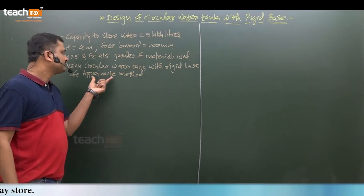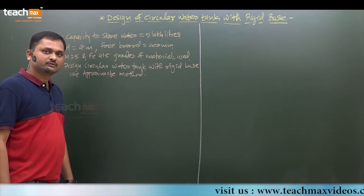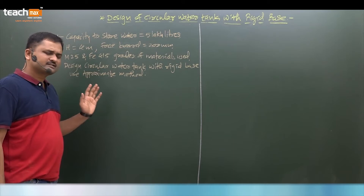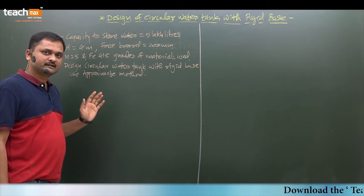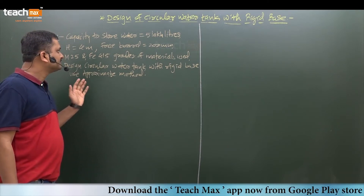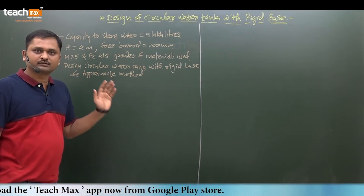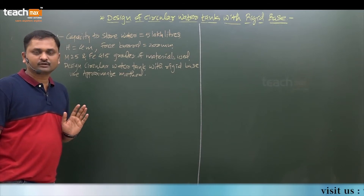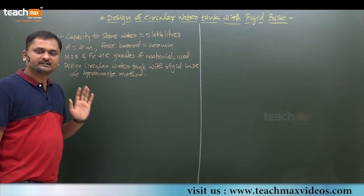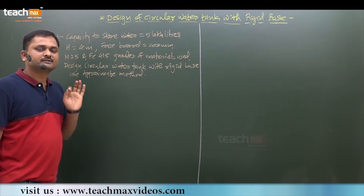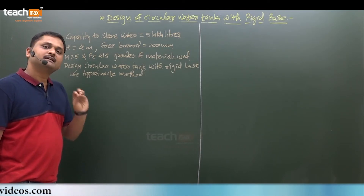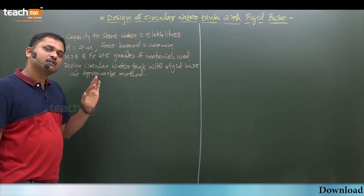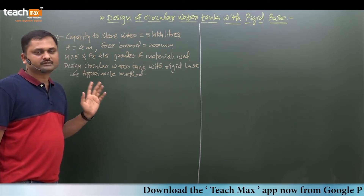We are asked to use the approximate method for the analysis. In this example, I am going to use the approximate method first. Later I will also solve the same example using the IS code method. Note that for circular water tank with flexible base, only the approximate method is applicable — no coefficients or tables are given in IS code for that case. For rigid base, you can use either method.